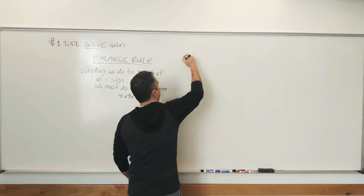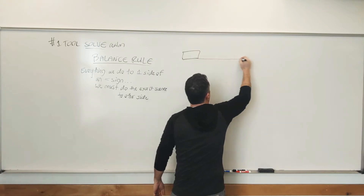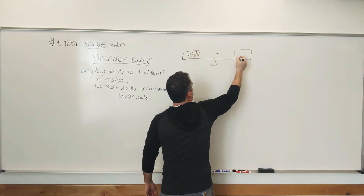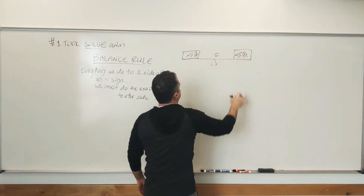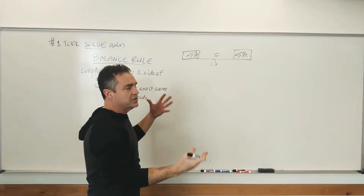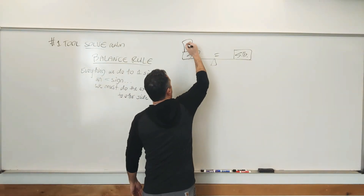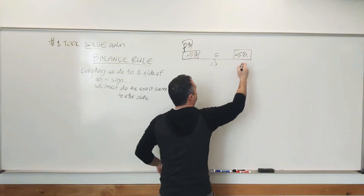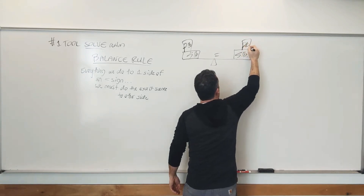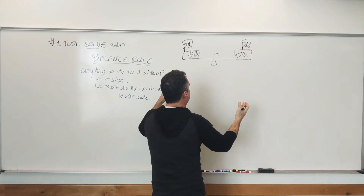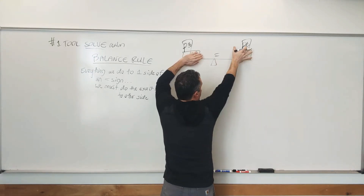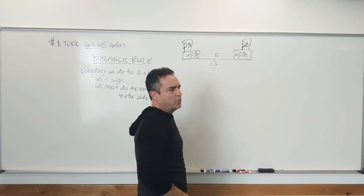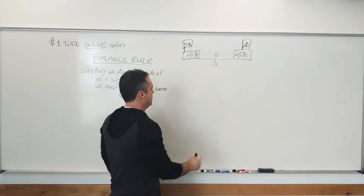Sometimes when we use this rule, I like to draw a scale. If this is a 5-pound weight and this is a 5-pound weight, they weigh the same, so this is balanced. If I throw a little 2-pounder on one side, it's going to drop down. But if I do the same thing to the other side and throw a 2-pounder there, they're going to balance back out. Whatever I do to one side of the equal sign, I've got to do the exact same thing to the other.